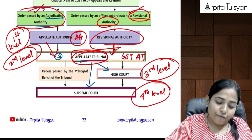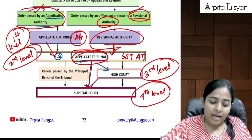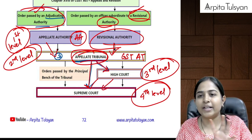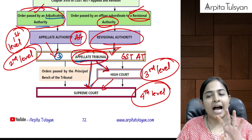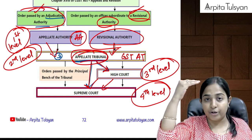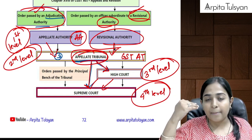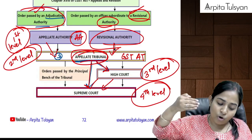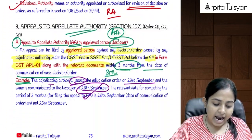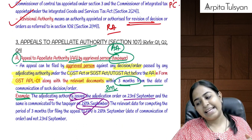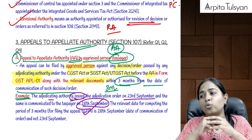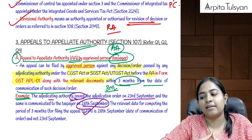In some cases from GSTAT we can directly jump to the Supreme Court, and in some cases we follow the hierarchy. The basic hierarchy is: adjudicating authority order → appellate authority → appellate tribunal → high court → supreme court.